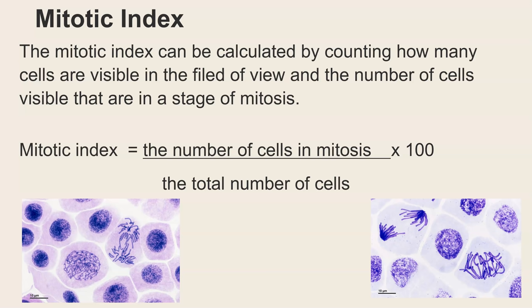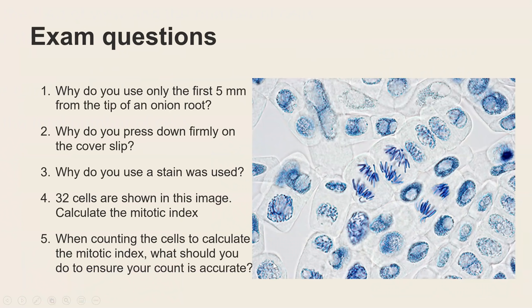So the mitotic index is a bit like a percentage where you're working out what percentage of cells are currently undergoing mitosis and if we have a look it's the number of cells in mitosis divided by the total number of cells times 100. So essentially it's the percentage of cells that are undergoing mitosis currently.